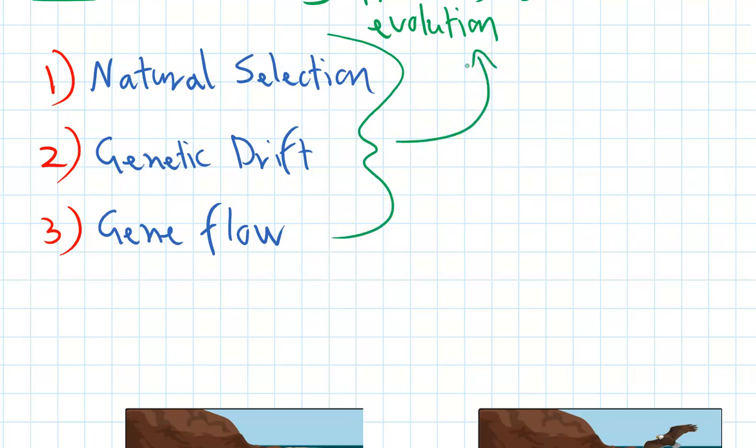These three processes all combine together to make evolution happen. And in some populations, one will have a greater effect than another, and one of them might not even occur at all in a certain population. But these are the three possible ways that species can evolve and populations can evolve.